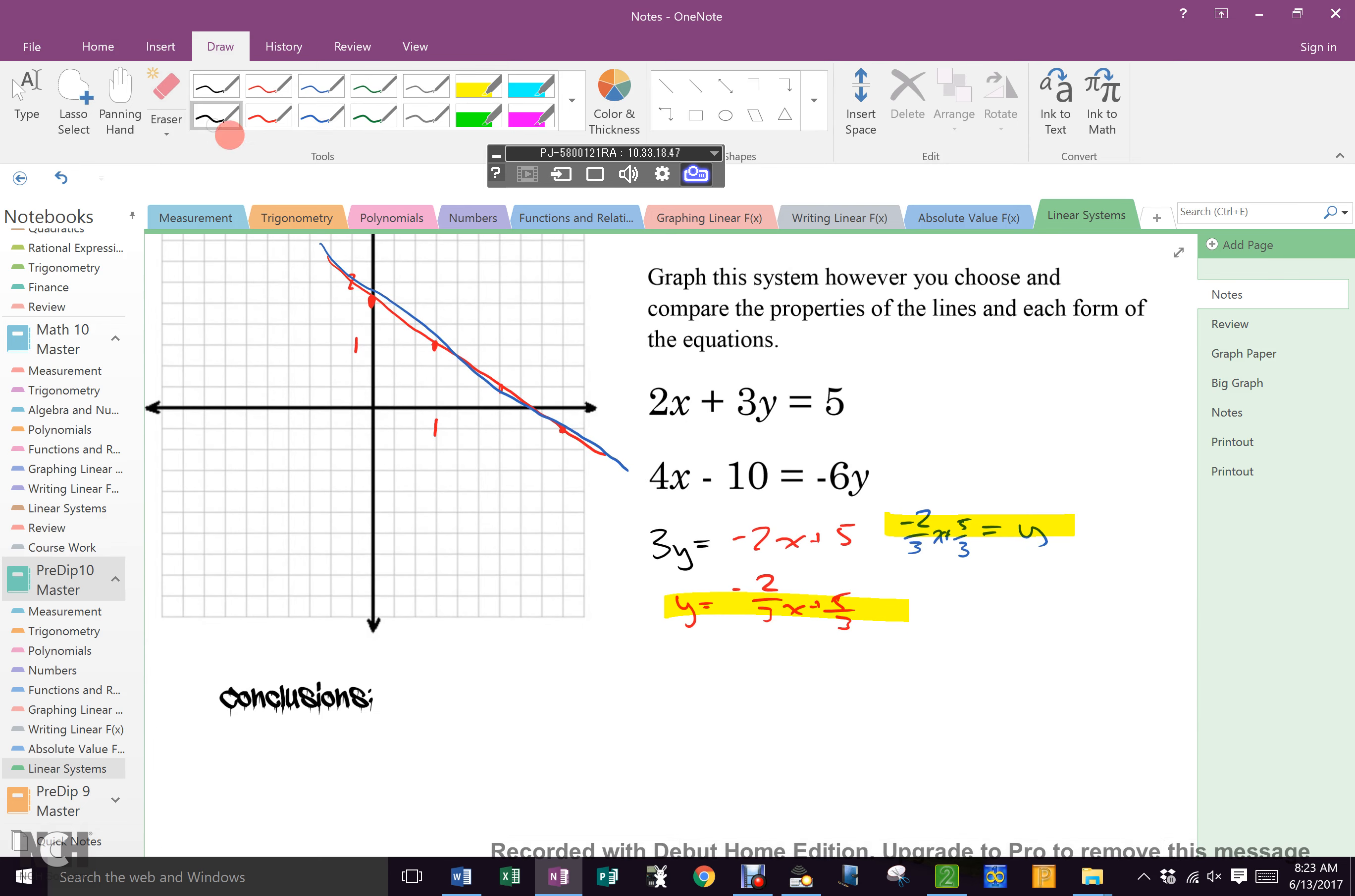So what's our conclusion? There's how many solutions, ISA? There's infinite solutions because they're the same line. So they intersect infinitely.